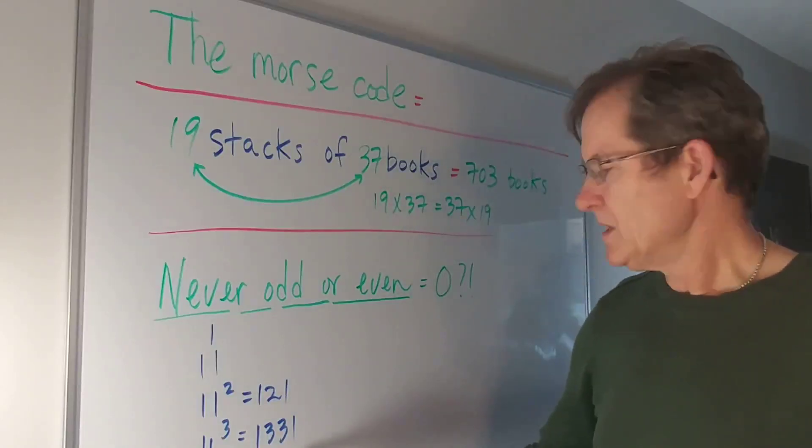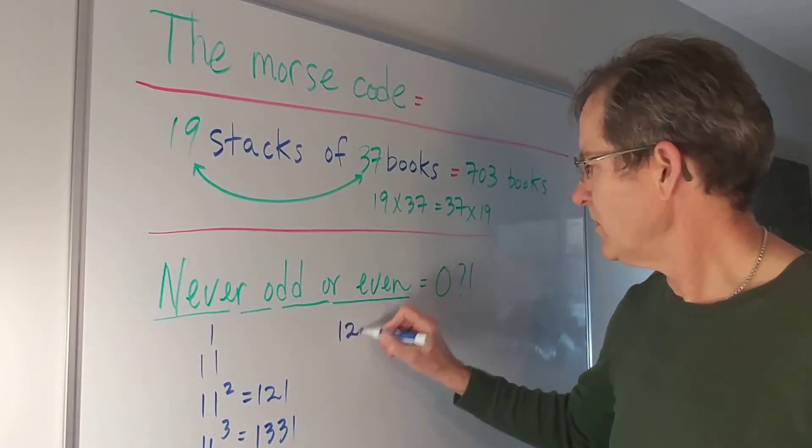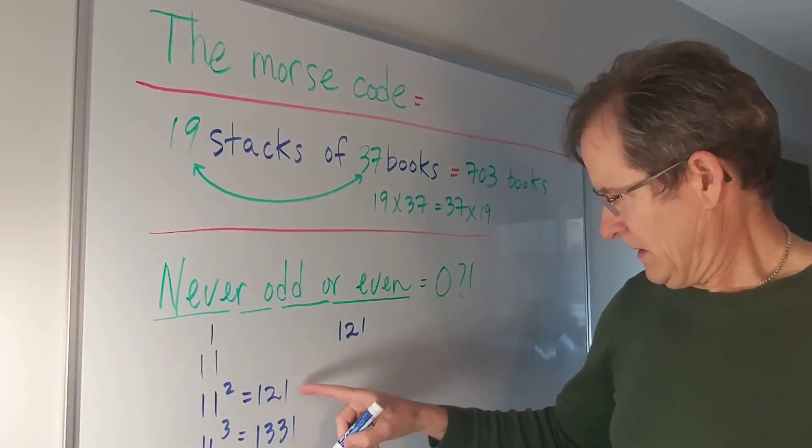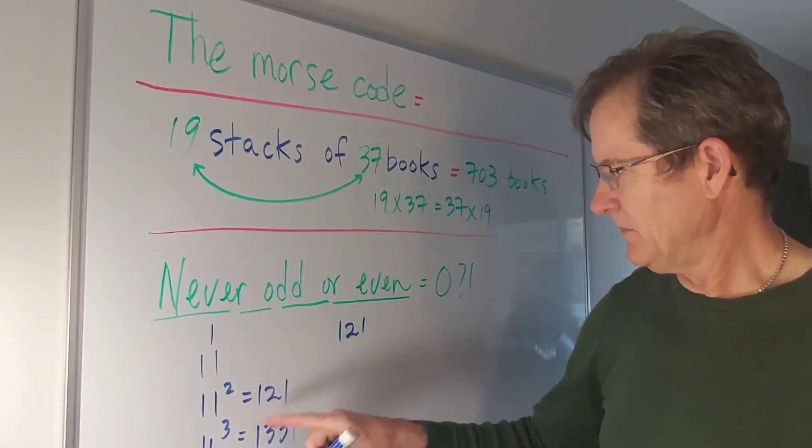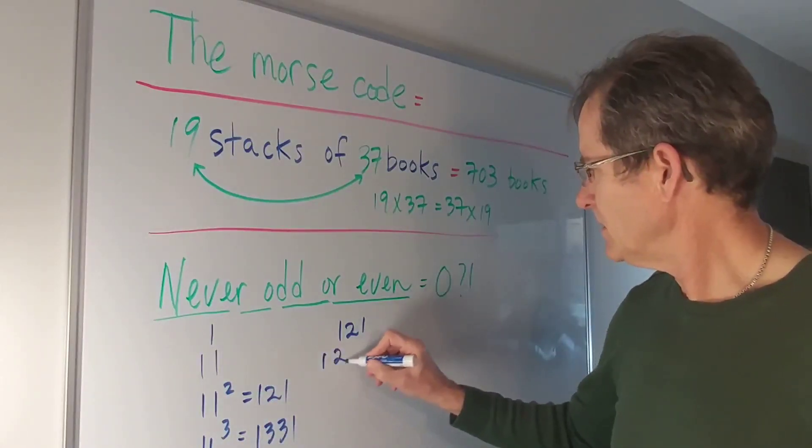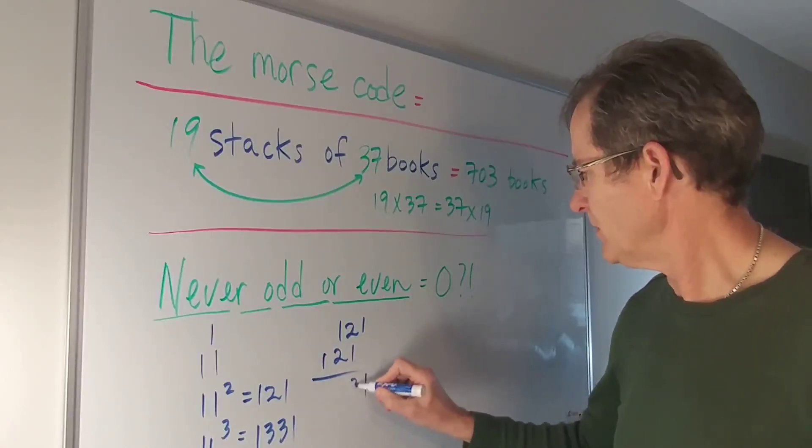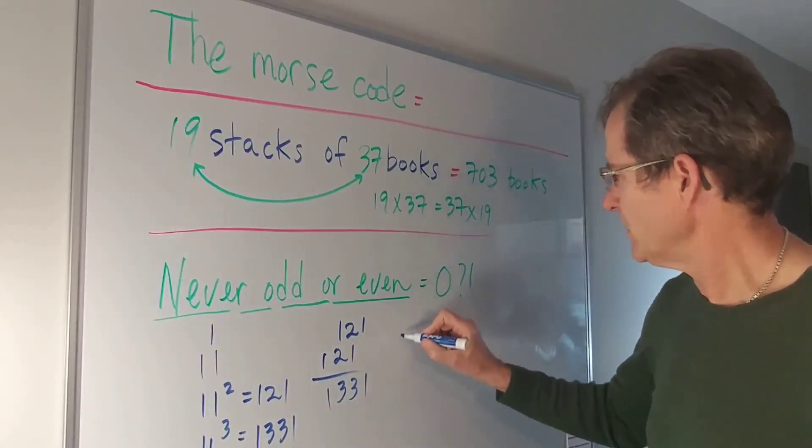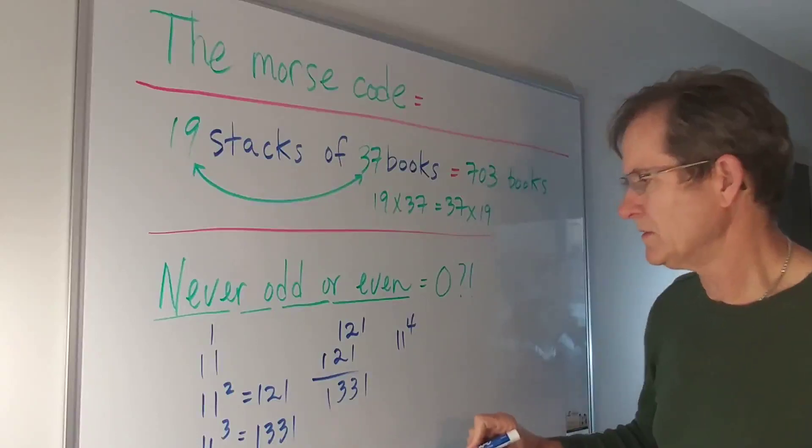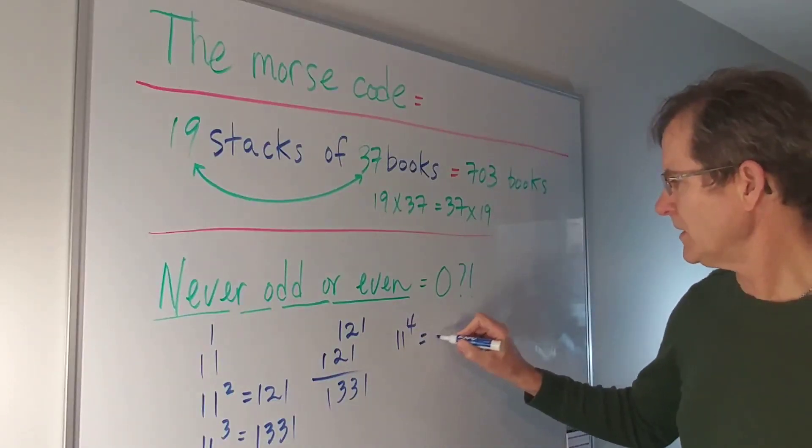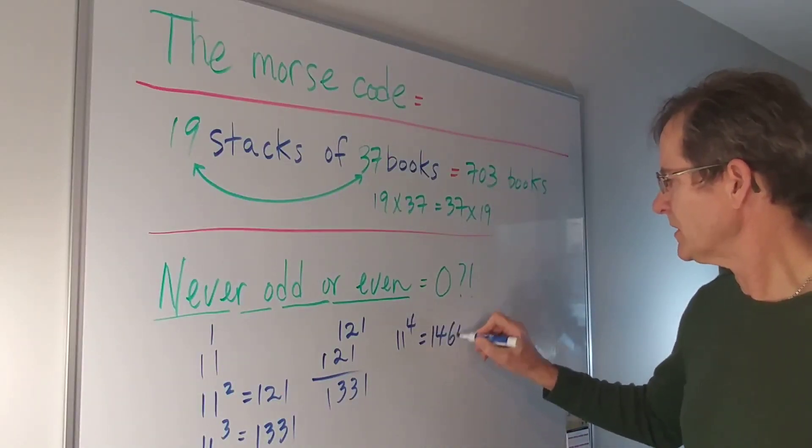By the way, how can you get that really easily? Well just take 121 and add 10 times it to get 11 times it. There you go, one three three one. How about 11 to the four? Well you can use that trick or you come up with one four six four one.